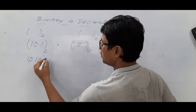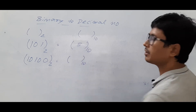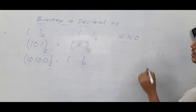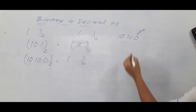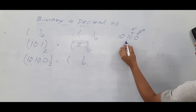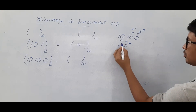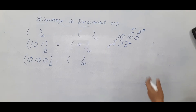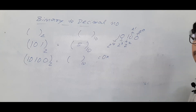Now take 10100 base 2. I want to find its equivalent decimal number. Assign the weights from right to left: the rightmost digit gets 2⁰, then 2¹, 2², 2³, and the leftmost gets 2⁴. Each place has its corresponding weight.